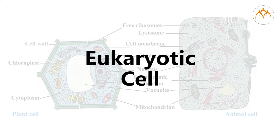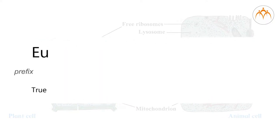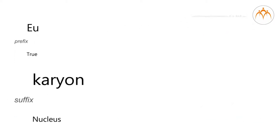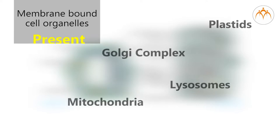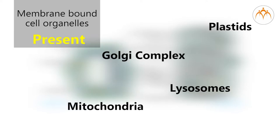Eukaryotic Cell: the word 'EU' stands for true and the meaning of 'Karyon' is nucleus. This structure is complex and advanced as compared to prokaryotic cell. Cells show presence of a true nucleus, i.e., the nucleus has a membrane. Other membrane-bound cell organelles like plastids, Golgi complex, lysosomes, mitochondria, etc. are present. In eukaryotic cells, genetic material is enclosed in a membrane-bound organelle.